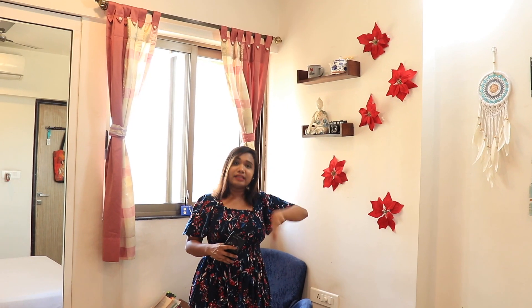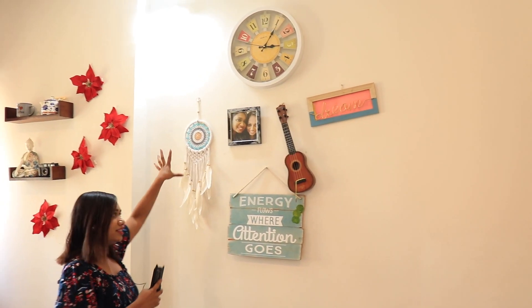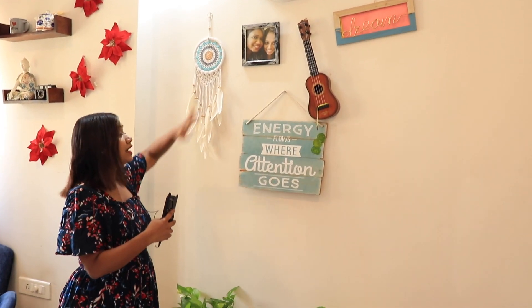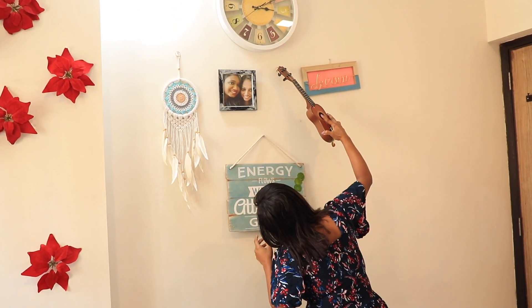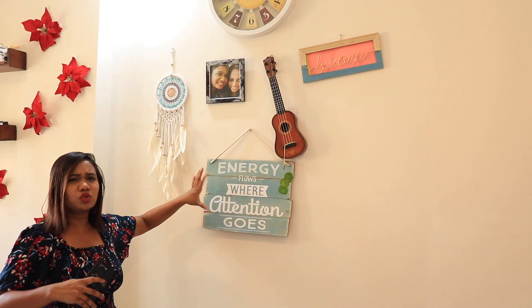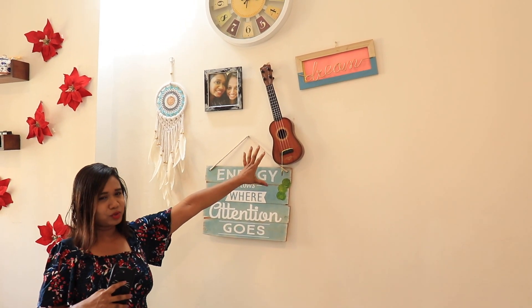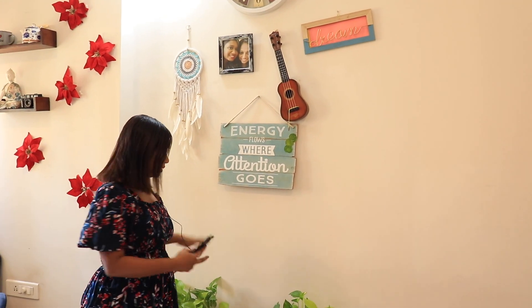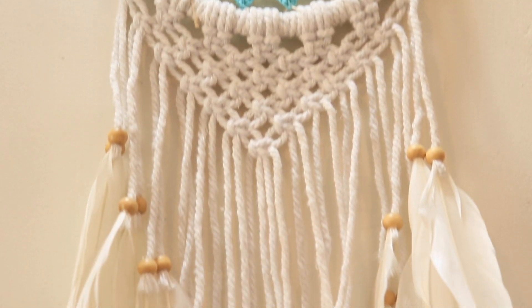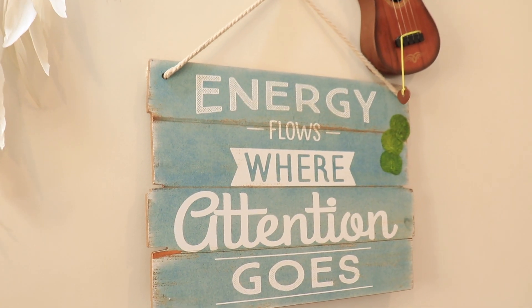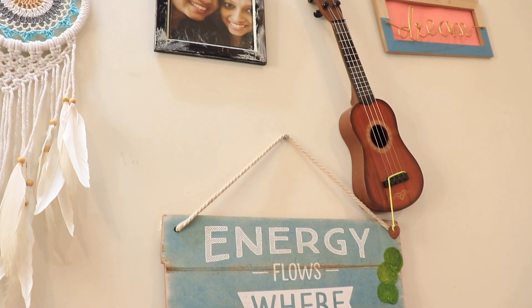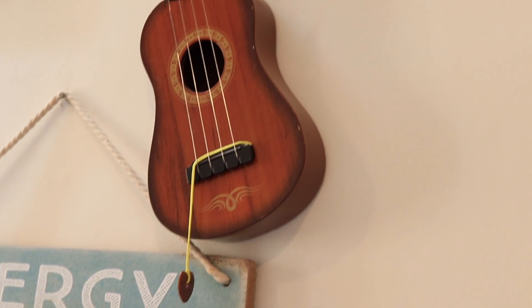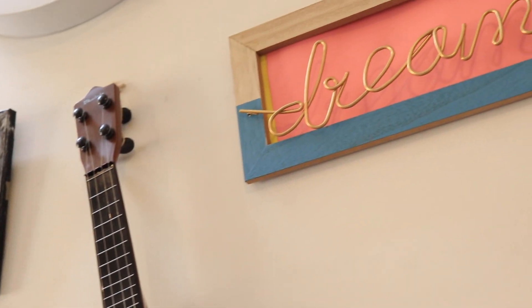The next area is this wall — it's like all the things that I love to do, kind of my dream wall. I love dream catchers, so I have one here. I have a quote saying 'Energy flows where attention goes', which is something I truly believe in. I want to learn how to play a ukulele, so I've put one here. There are also plants and a rug. The dream catcher is from Bali — one of my friends got it. The wooden plank is from Market 99, the frame is from Amazon, the ukulele is from Amazon, and the 'Dream' lettering is also from Market 99.